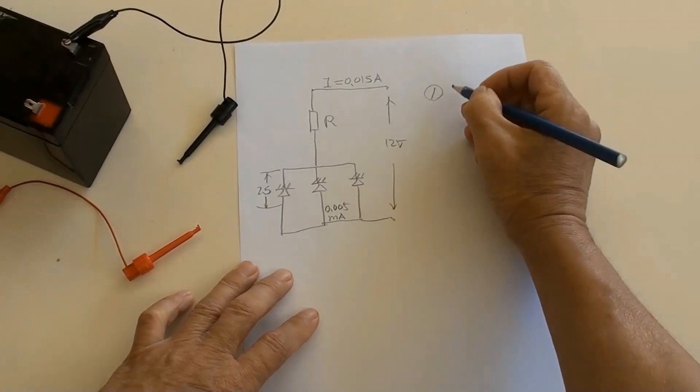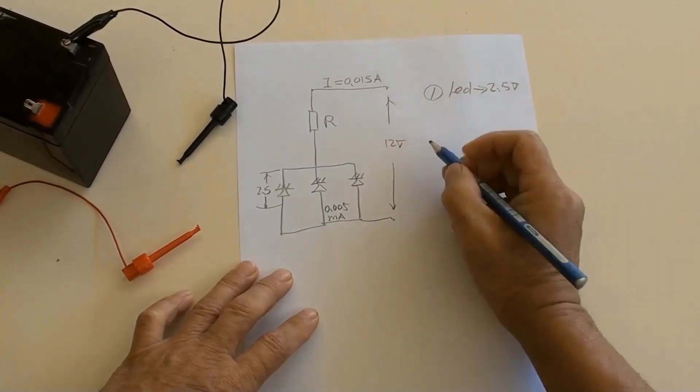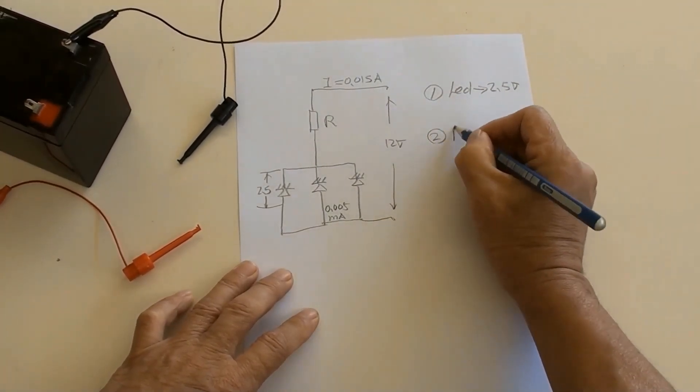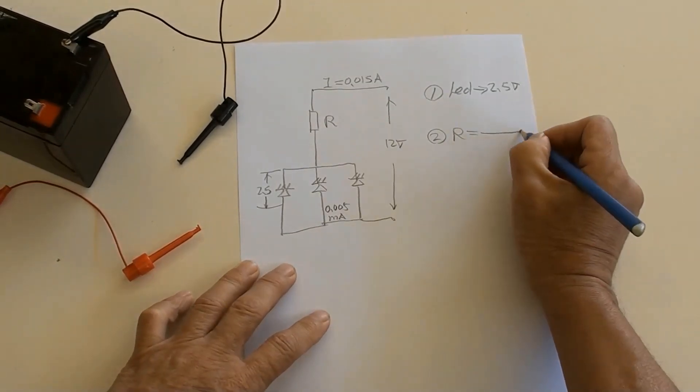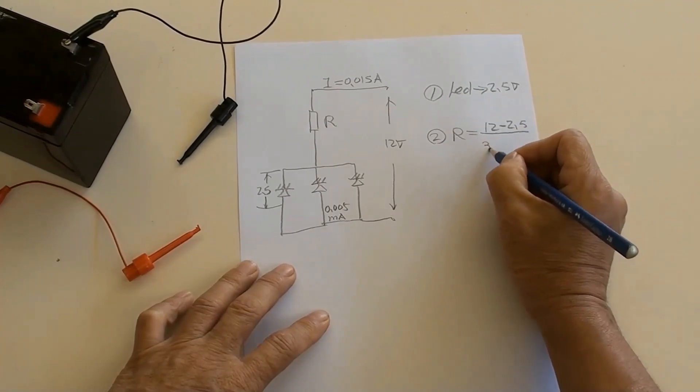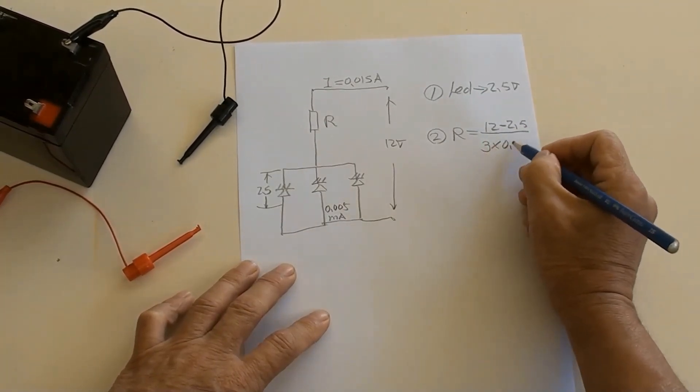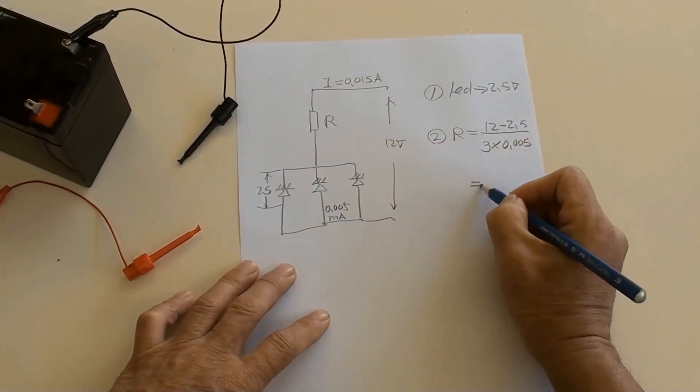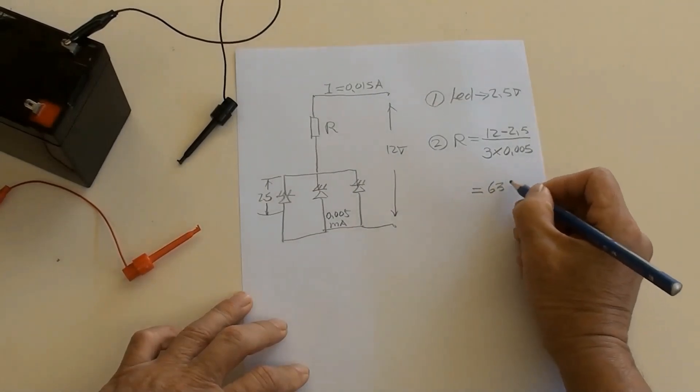First, each LED is 2.5 volt. Second, resistor equals 12 volt minus 2.5 volt over three times five milliamperes equals 633 ohms.